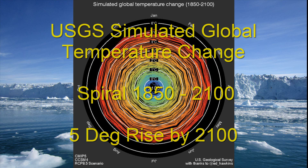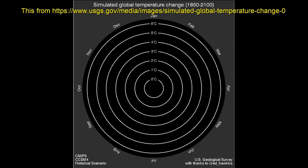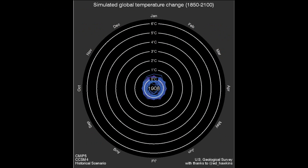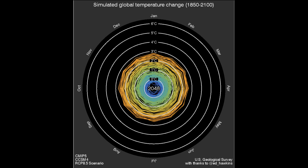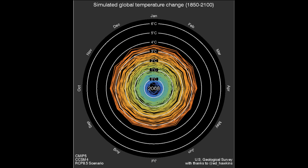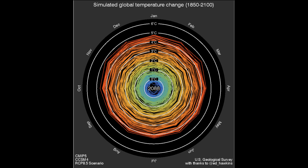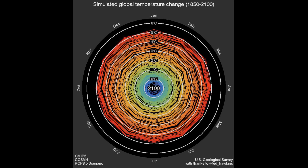Hello everyone, Smithy here. Welcome to another video. Today we've got an advanced version of the global temperature change spiral. This is based on the earlier video we did about Ed Hawkins, and the USGS have now taken that and put it up to 2100, using the same climate models to see where global temperature goes.